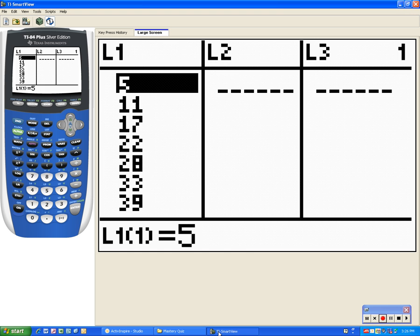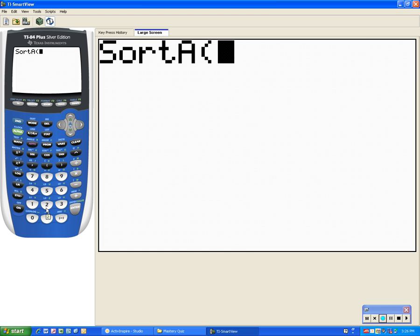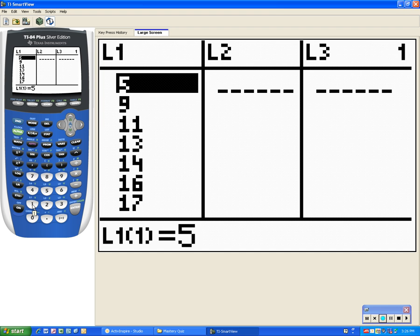So remember, hit your stat button, pick number two, sort A for ascending. Tell it the list. Remember, hit second, and then hit the number at the bottom. So list one would be the number one. Close it, enter. Go back to your stat edit, and your numbers should be in order from smallest to least. So that would be your first step. Go ahead and get the data organized.